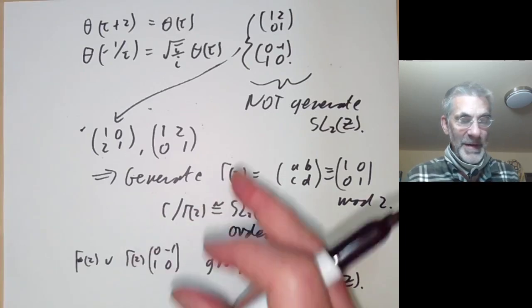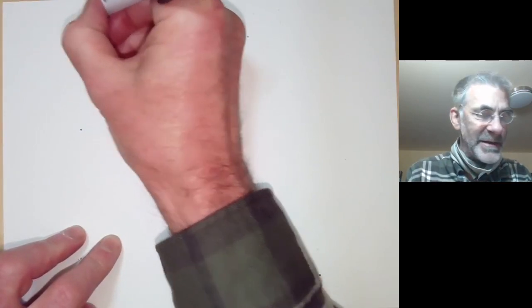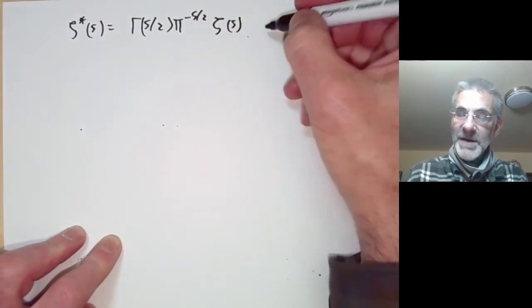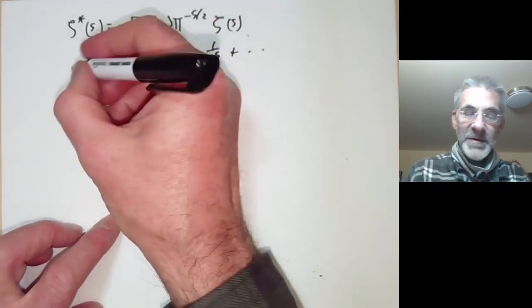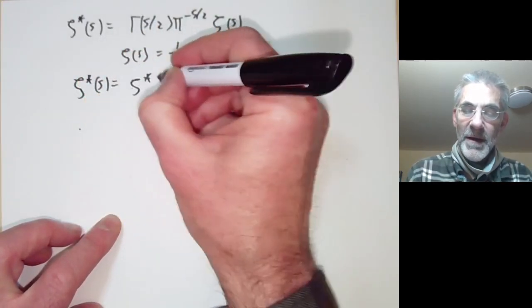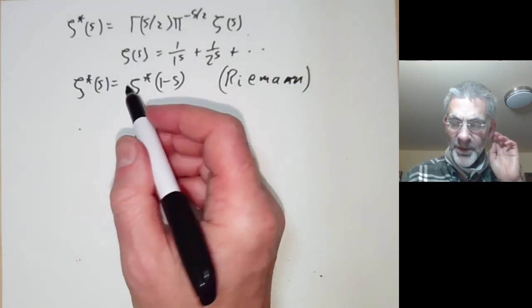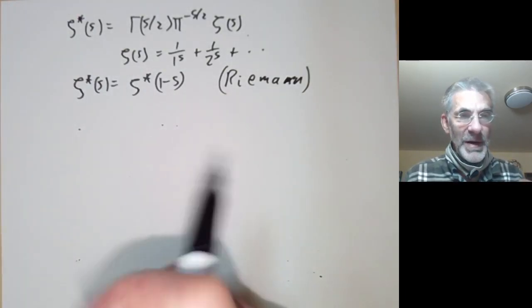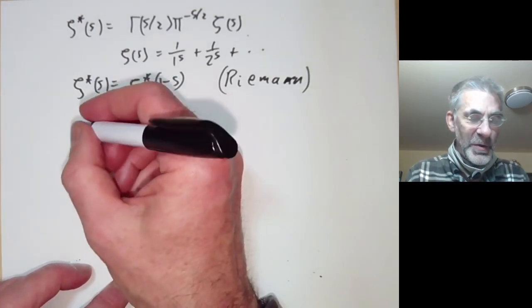What we're going to do is use this theta function to get the functional equation for the Riemann zeta function. We put zeta-star of s to be gamma of s over 2 times pi to the minus s over 2 times zeta of s, where zeta is the usual Riemann zeta function. The functional equation says that zeta-star of s equals zeta-star of 1 minus s. Riemann found a very neat proof of this using the functional equation of the theta function, by writing down one half the integral from zero to infinity of theta(ix) times x to the s over 2 minus 1 dx.